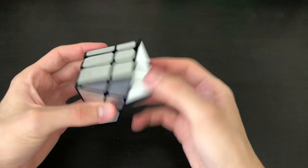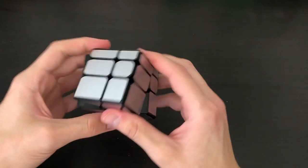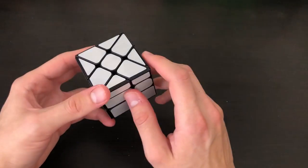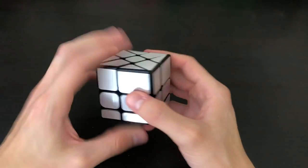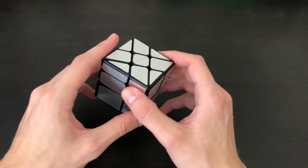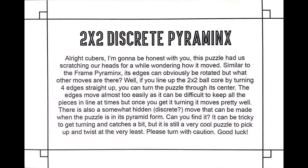If you like the mirror cube I definitely recommend getting something like this - a little bit more challenging but you can use what you know about that cube and apply it to here. So there is the windmill mirror cube. Now let's jump on to the 2x2 discrete pyraminx. All right cubers, I'm gonna be honest with you, this puzzle had us scratching our heads for a while wondering how it moved.